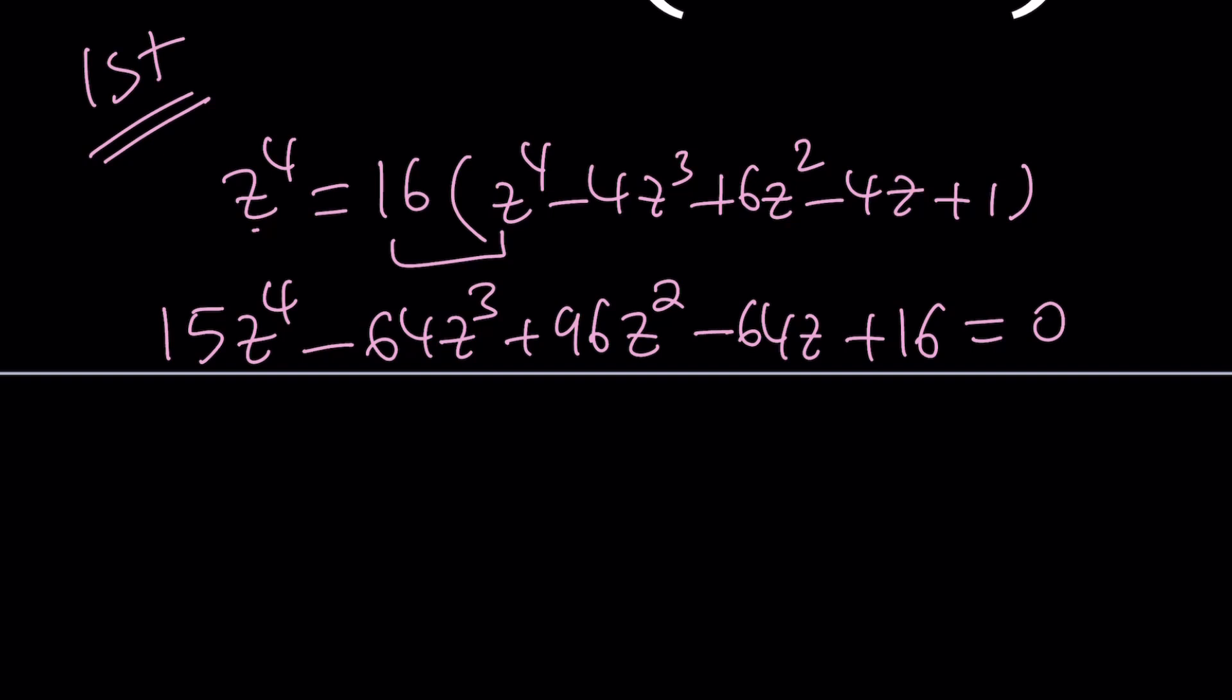But we can still use it. There's a much better way though, and that's called RRT or Rational Root Theorem. If there are any rational roots, they're going to come from factors of this number, which is the constant, divided by the factors of this number, which is the leading coefficient. In other words, you're going to be looking at all factors of 16, and then combine them with all possible factors of 15.